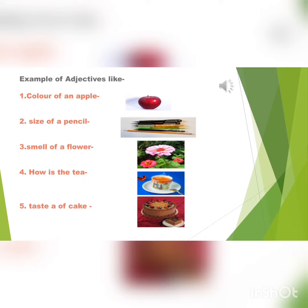Let's move to sentence four: how is the tea? You can clearly see the tea is hot. So hot is the adjective and tea is a noun. And the last sentence is taste of a cake. What is the taste of a cake? You can guess easily — the taste of a cake is sweet. So sweet is the adjective and cake is the noun.